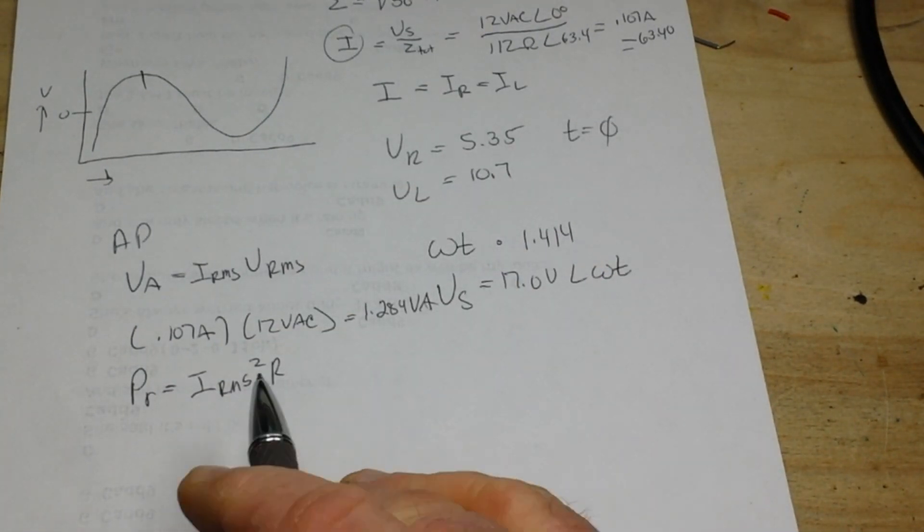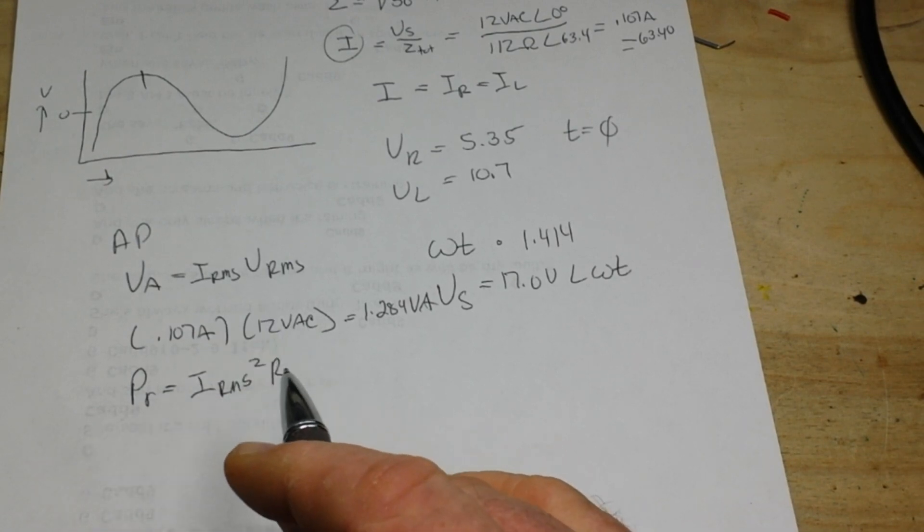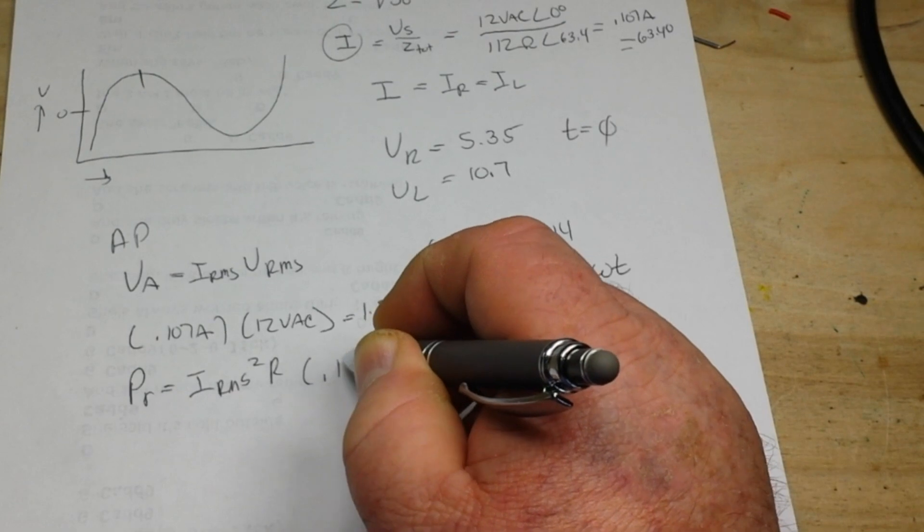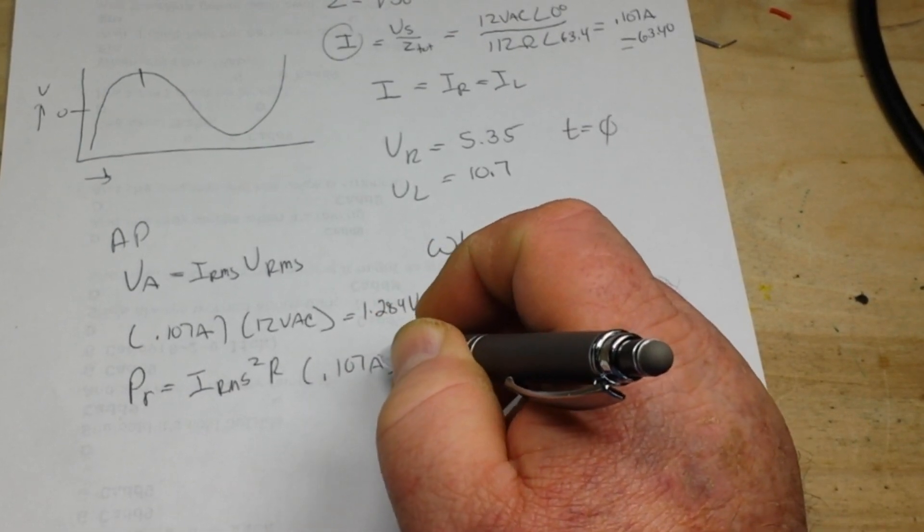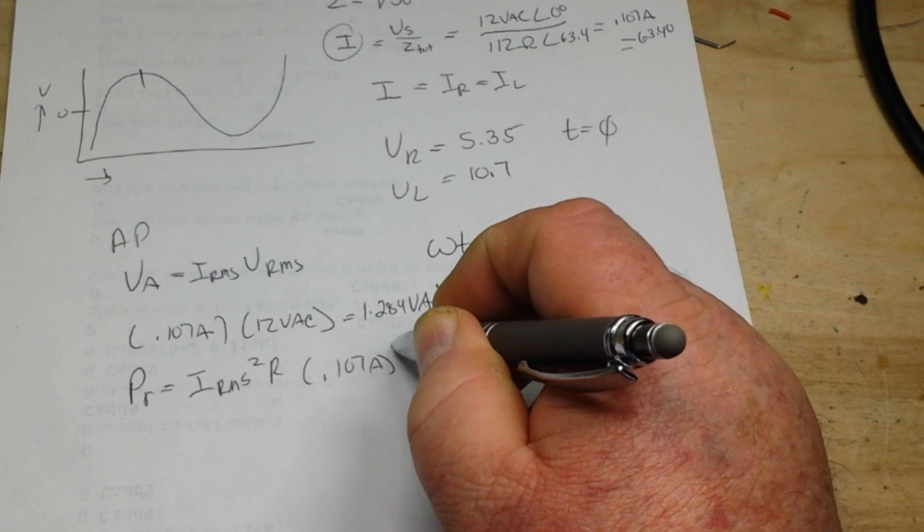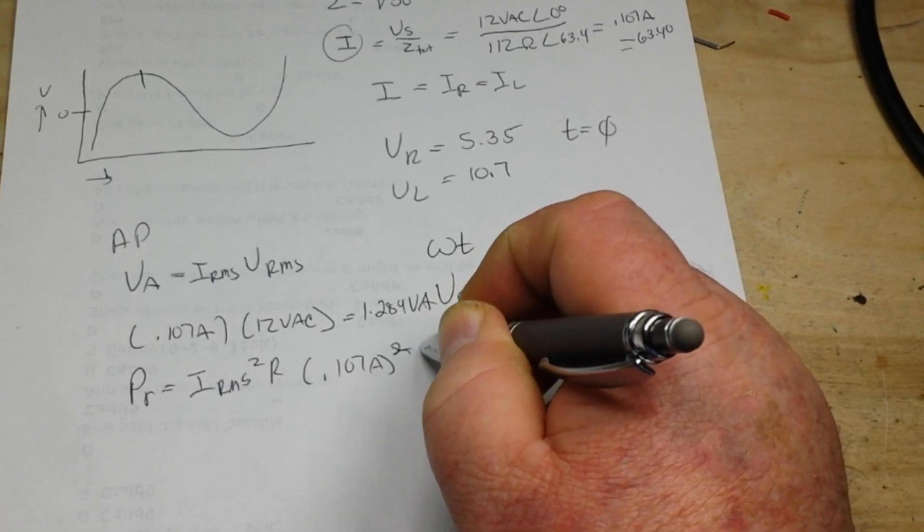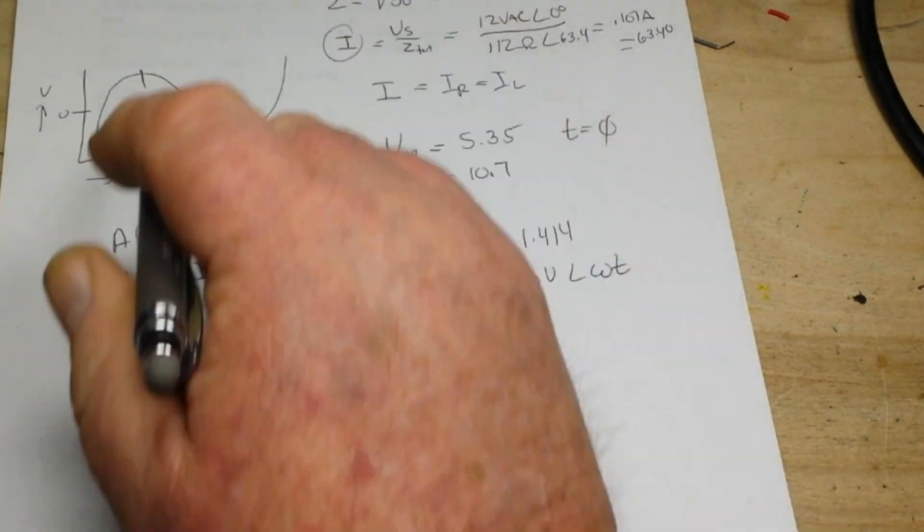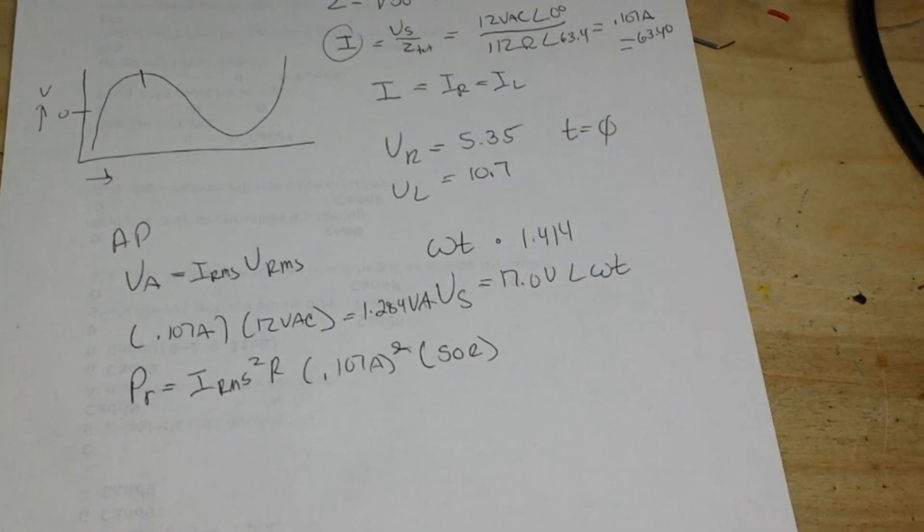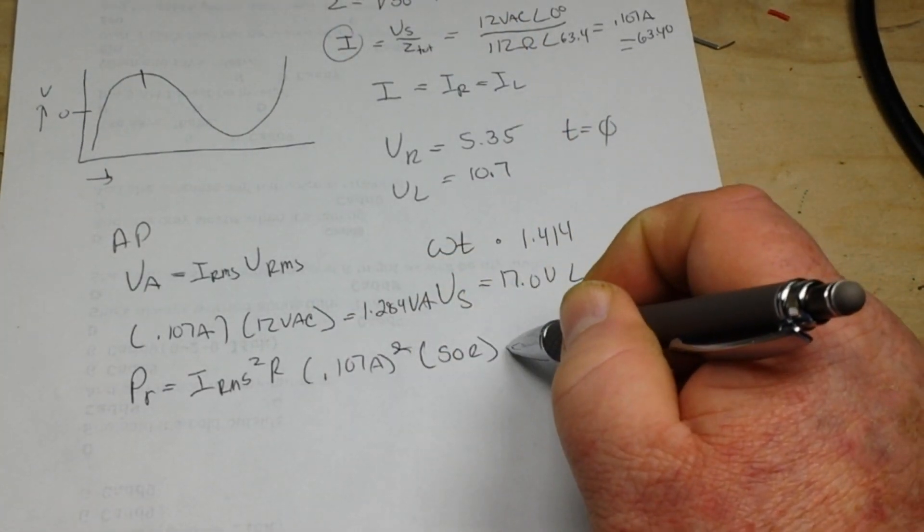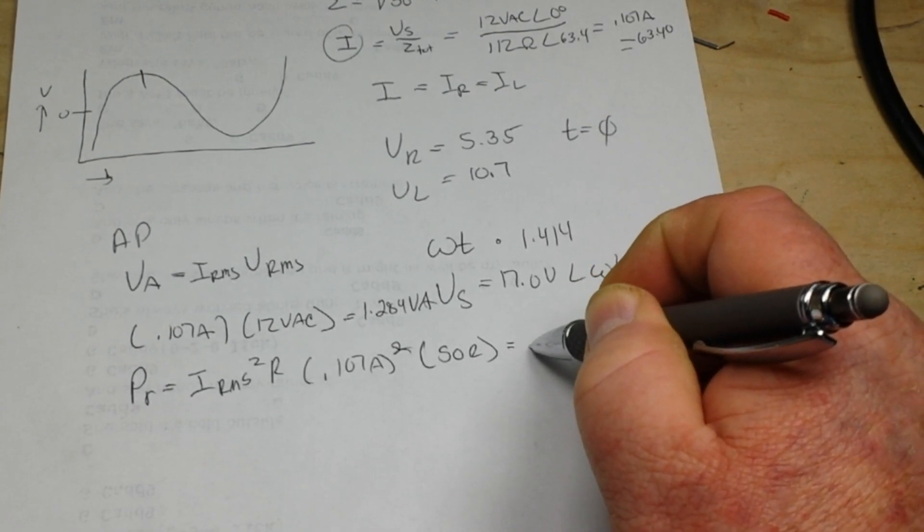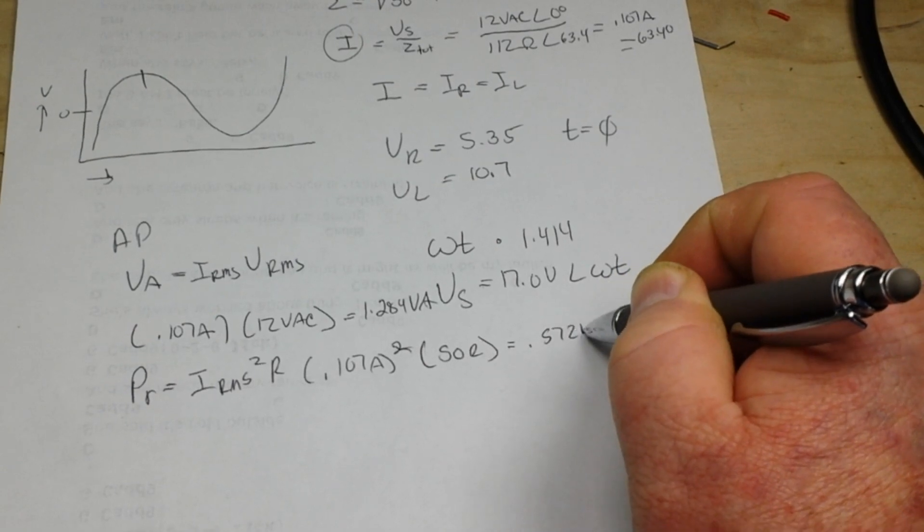So now we can say that our PR is equal to our current RMS squared times the resistance, because only the resistance part is consuming the power. So we're back to 0.107 amps squared times 50 ohms—that's what we had up there—and we get our resistant power of 0.572 watts.